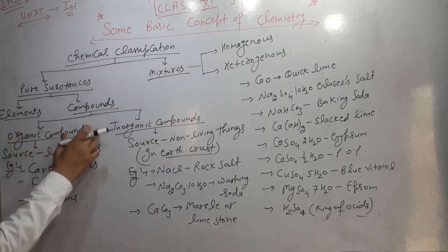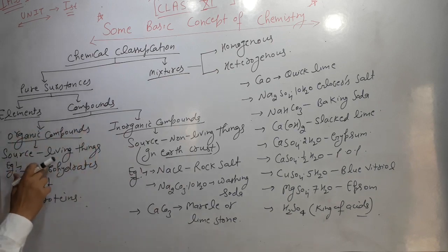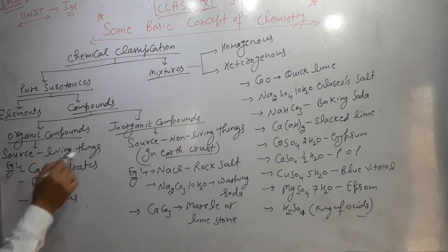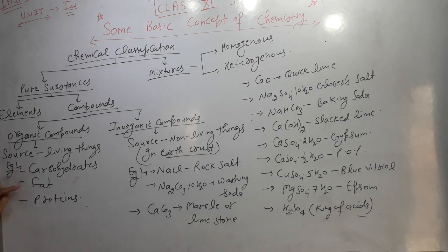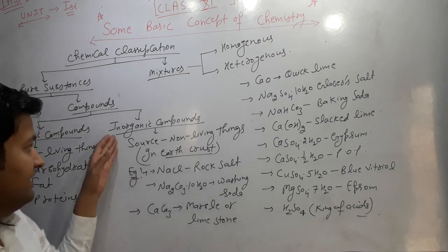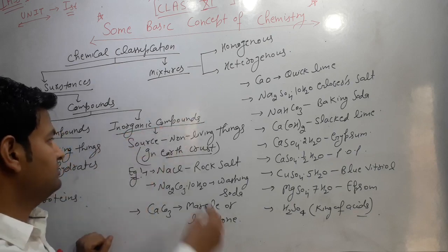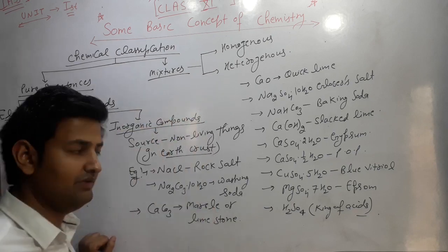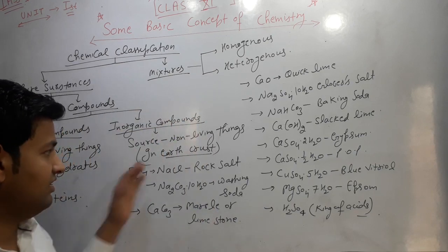Organic compounds are those compounds which are mainly derived from living things — extracted from living things. Examples of organic compounds are carbohydrates, proteins, vitamins and fats. In the case of inorganic compounds, the source is non-living things — from the earth's crust.